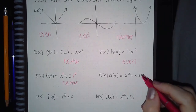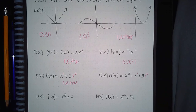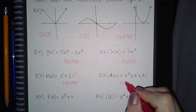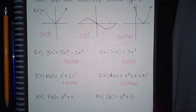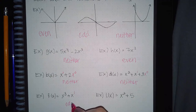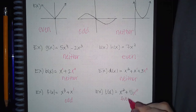Here you have an exponent of 2, an exponent of 1, and an exponent of 0. The exponents 2 and 0 are even, and 1 is odd, so the whole thing is neither even nor odd. Here you have exponents of 3 and 1 — both are odd exponents, so the entire function is odd. Here you have x squared and x to the 0 — both exponents are even, so you have an even function.